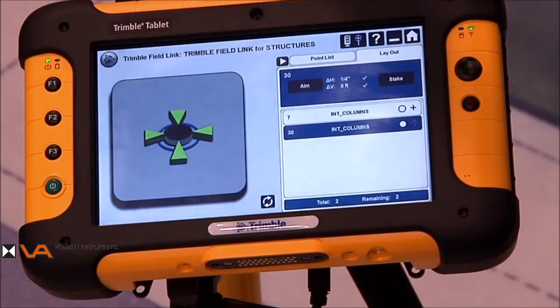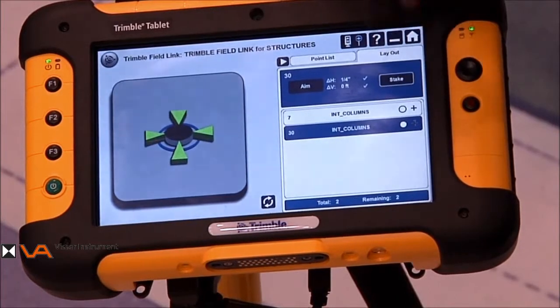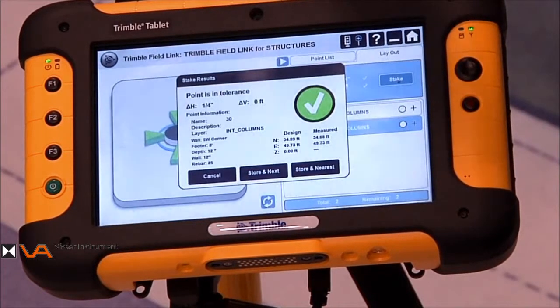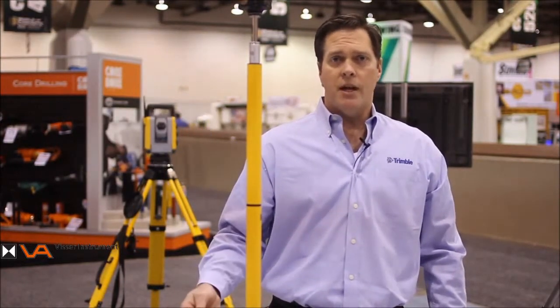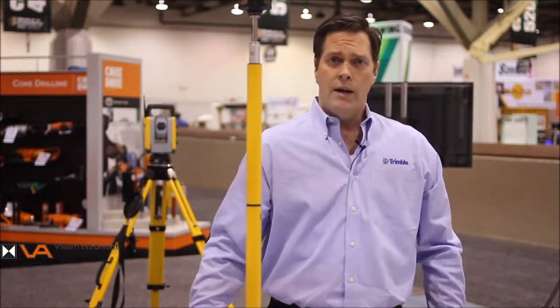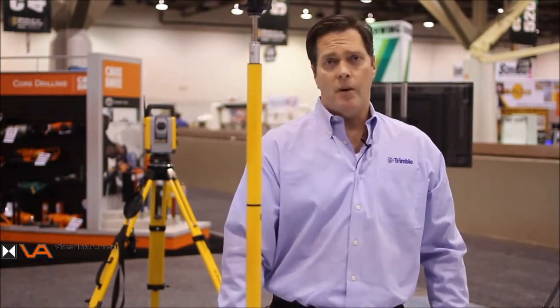Once we've made it inside tolerance, we can then stake the point, and we get a lot of information to tell us about what this point is, what tolerance level we're willing to accept, also what the design coordinates are, and the as-built coordinates. This can be used to send back to the model to make sure that we're building what's actually been designed in the model.